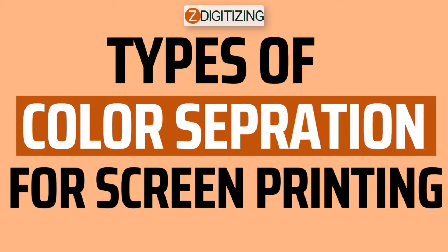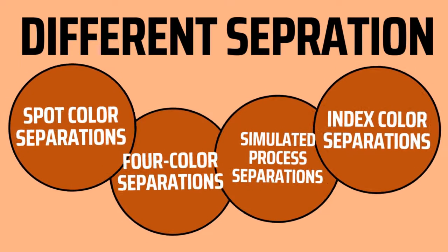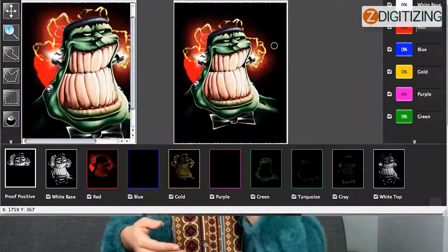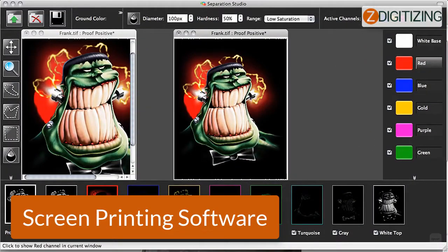Types of color separations for screen printing. Knowing the different kinds of separation and the challenges involved could help you in doing amazing and successful separations daily. However, mastering the process successfully may take years of practice. Screen printers could make the process easier with the right screen printing software. Understanding which of the procedures will work best for your design would help you reach the best results, and it is also important to have access to reliable screen printing software.